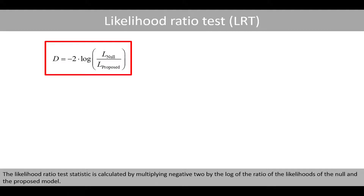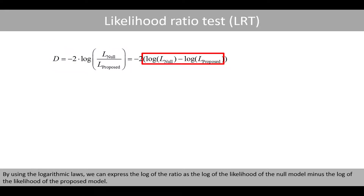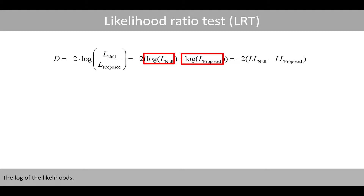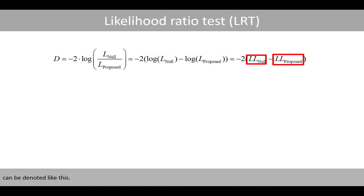The likelihood ratio test statistic is calculated by multiplying negative 2 by the log of the ratio of the likelihoods of the null and the proposed model. By using the logarithmic laws, we can express the log of the ratio as the log of the likelihood of the null model minus the log of the likelihood of the proposed model. The log of the likelihoods can be denoted as shown.